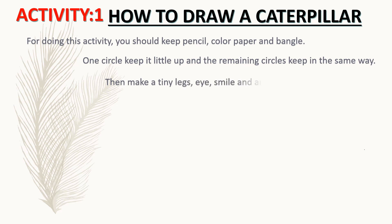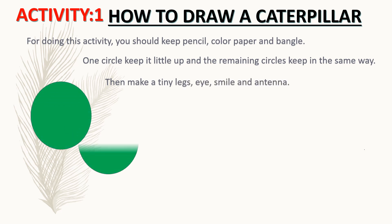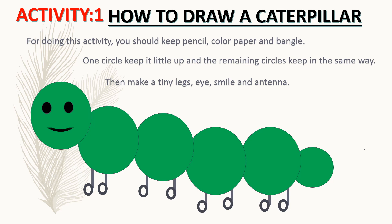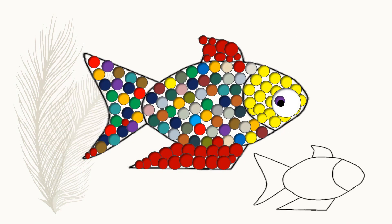Keep one circle a little up and the remaining circles in the same way. Then make tiny legs, a smile, and antenna. Now your caterpillar is ready. Now we will do the second activity.